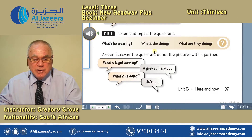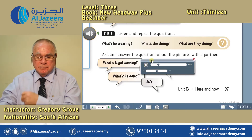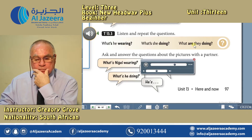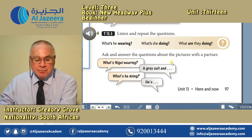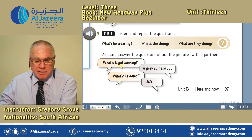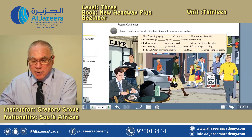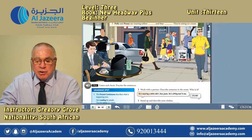Listen and repeat the questions. Tapescript 13.3: What's he wearing? What's she doing? What are they doing? And ask and answer the questions about the pictures with a partner. What's Nigel wearing? A grey suit and... What's he doing? He's running, eating, walking. What are they doing? What are they wearing? In other words, look at the picture and ask questions about it with your partner.